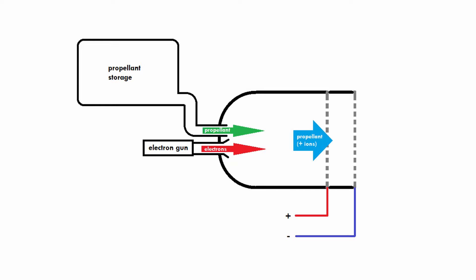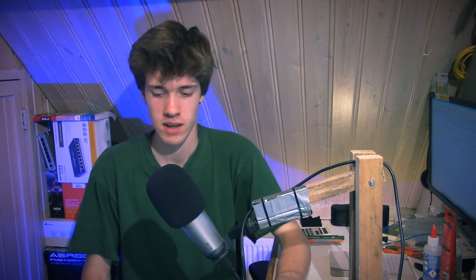Now, these ions will then enter the last part of the ion thruster, which consists of two grids. One of these grids is positively charged, and the other one — the one at the back — is negatively charged. This means there is an electric field between these two grids, kind of like the electric field between the two charged plates in a capacitor. The positive ions enter the space between these two grids, get accelerated by the electric field, fly through the second grid at the back of the ion thruster, and fly out into space at high speed. That is your high-speed beam of ions that creates the thrust of the ion thruster.